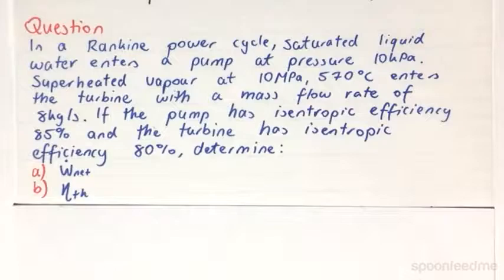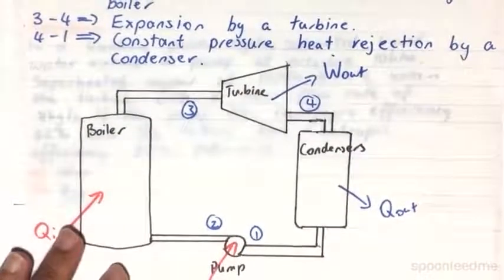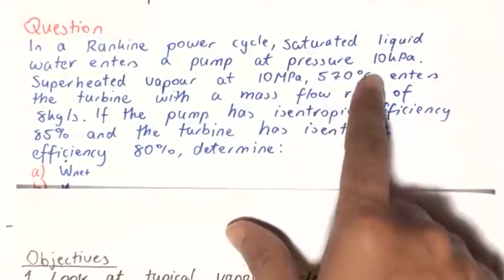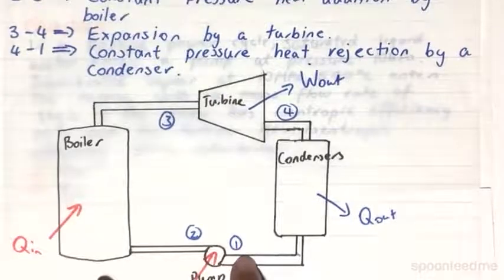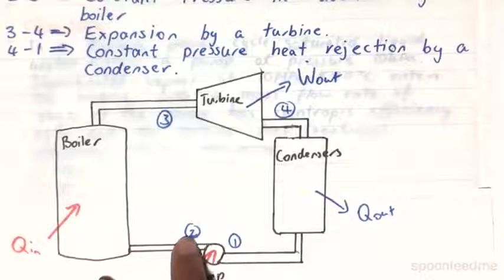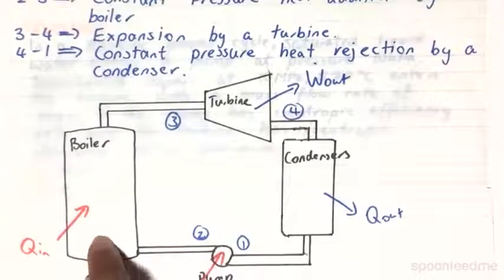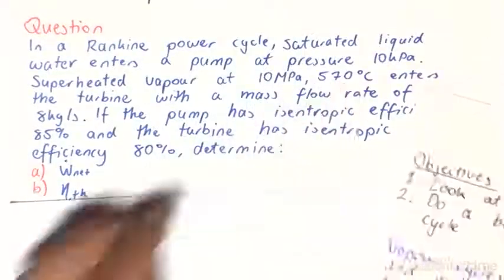So if we go back to our diagram for the normal Rankine power cycle, what this question is telling us is that the pump pressure is 10 kilopascals, so it's going to be 10 kilopascal pressure here and it's going to be raised to 10 megapascal pressure over there. And then enter the boiler where the pressure will remain 10 megapascals but the temperature will increase to 570 degrees Celsius.